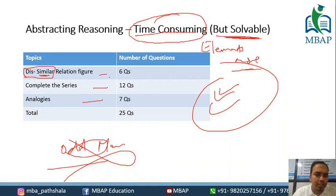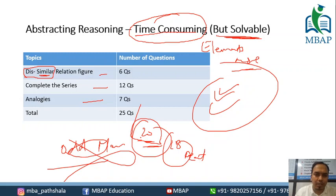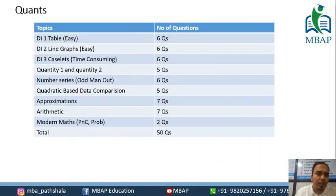If you have to score, a very good score is around 18 and a decent score is 20. Overall easy, easy, easy in many parts.